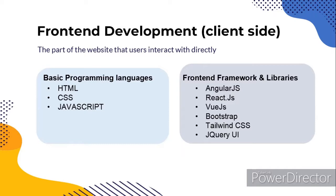There are also different types of frameworks and libraries used in front-end development. Some of the frameworks are AngularJS, React.js, and VueJS. We also have libraries like Bootstrap, Tailwind CSS, and jQuery UI.